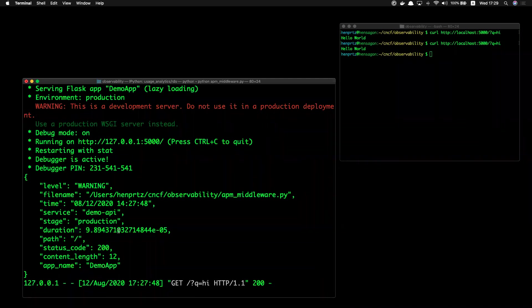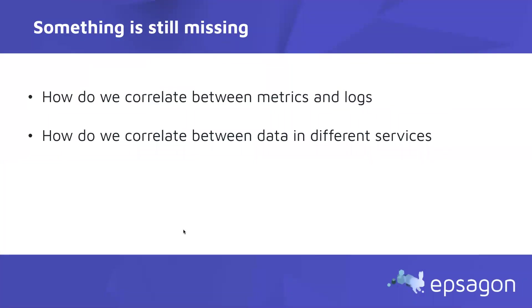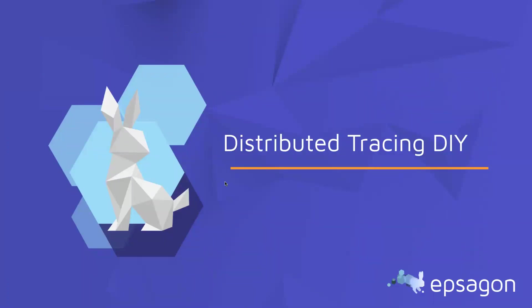It's pretty nice what we did so far, but for a highly distributed system we need to be able to correlate those metrics and logs across different services. That brings me to explaining distributed tracing. I'm sure many of you have heard about this and are already practicing it. I'm going to show how you can do it yourself using open source tools — and open source tools have improved hugely in this area, making it pretty easy to implement.